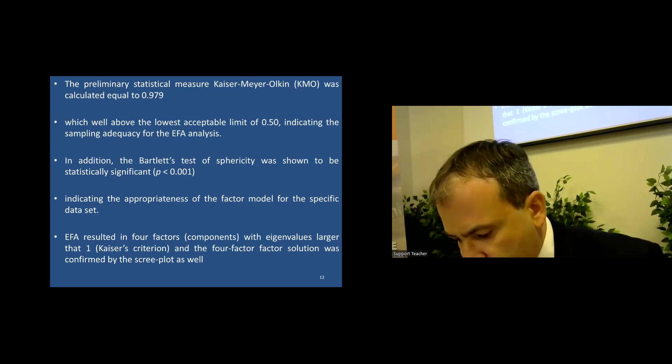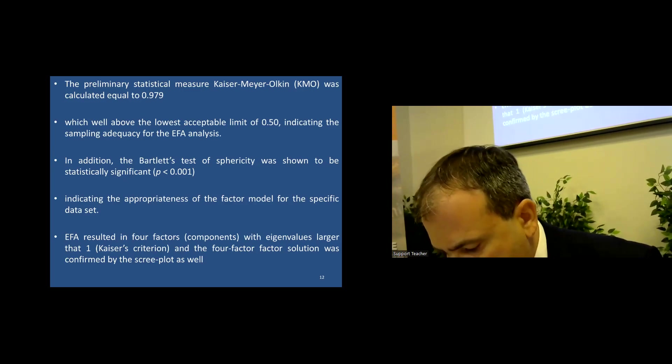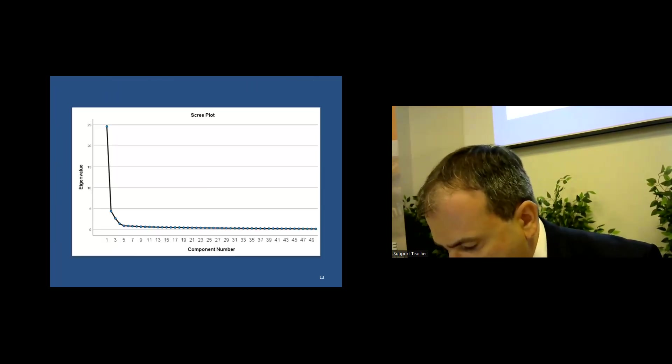The preliminary statistical measure, the KMO from Kaiser-Meyer-Olkin, was calculated equal to 0.979, which is above the lowest accepted limits, indicating the sample adequacy of the EFA analysis. EFA resulted in four components, factors, with eigenvalues larger than one. The four-factor solution was confirmed by the scree plot as well, which is shown in Figure 1. It is also noted that the term factor is used interchangeably with the term component.